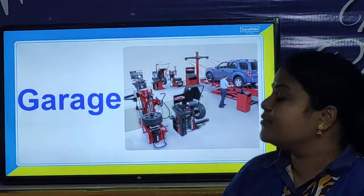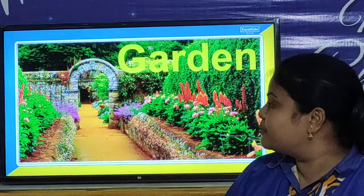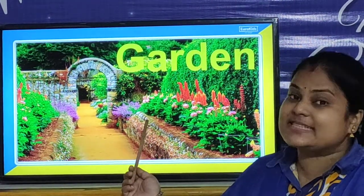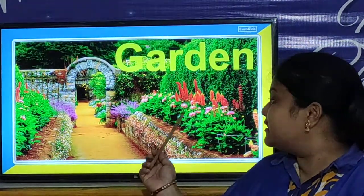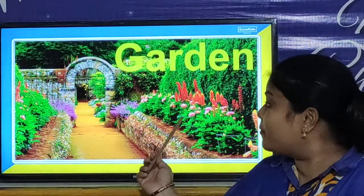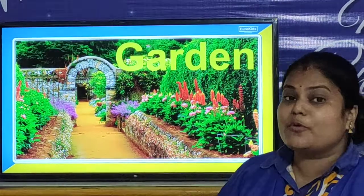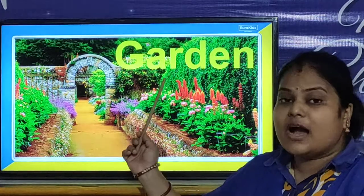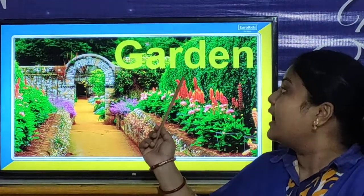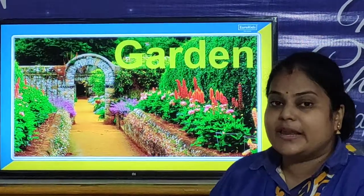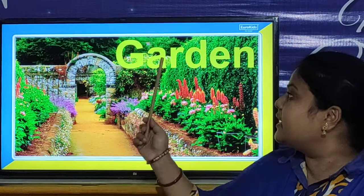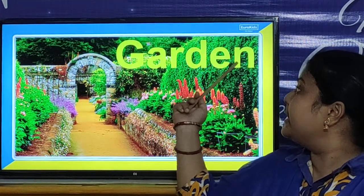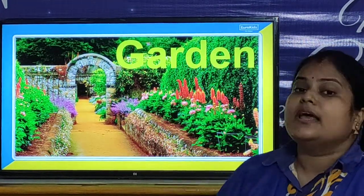Now we will look at our next picture. Wow, what is this? It is a garden. There are so many flowers. It is looking so beautiful. G for garden. And what is the spelling of garden? G-A-R-D-E-N. Garden.